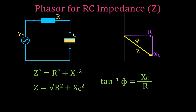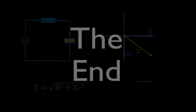That's everything we wanted to cover — the voltage phasor diagram, the impedance phasor diagram, and the phase angle for RC circuits. I have some links to calculation examples so you can see how to work those problems for RC circuits. Thank you very much for watching. If you found it helpful, please subscribe to my channel, give me a thumbs up, and leave a positive comment below.